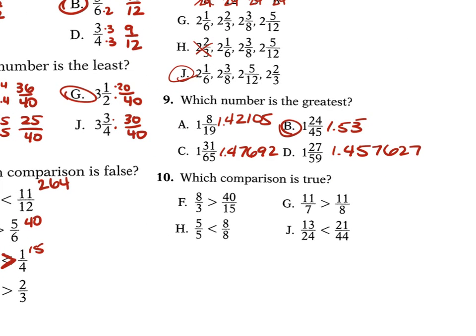Problem 10 asks which comparison is true. For F: 3 times 40 is 120 and 8 times 15 is 120 — they should be equal, not as stated. For G: 8 times 11 is 88 and 7 times 11 is 77 — 88 is greater than 77, so G is true.